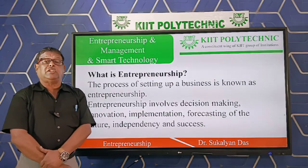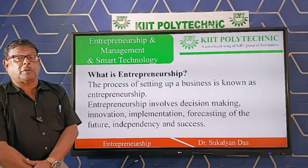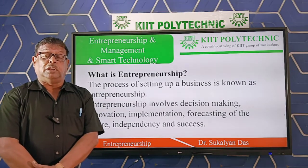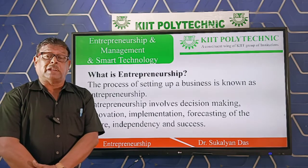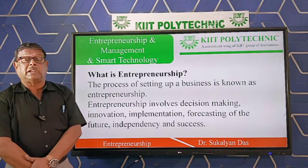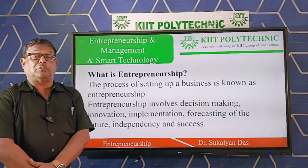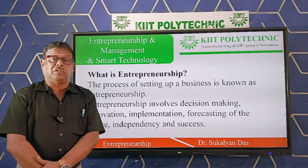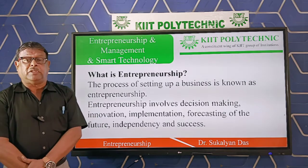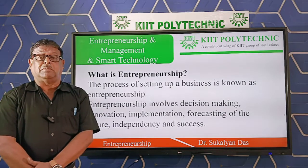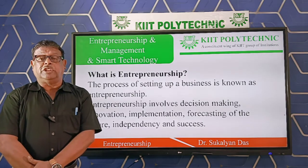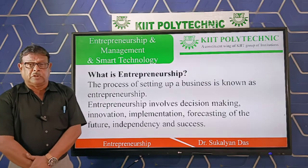After that, you have to decide what type of products you are going to produce. It is a predetermined objective — without a proper objective you cannot start a business. You should predetermine your objective: what type of products you want to produce, how they can be implemented and produced. For that you have to arrange human resources, raw materials, and techniques and procedures.